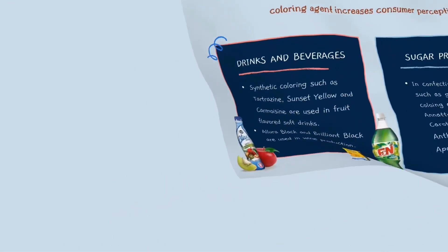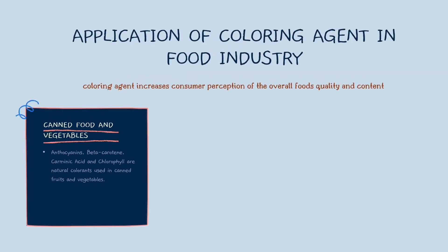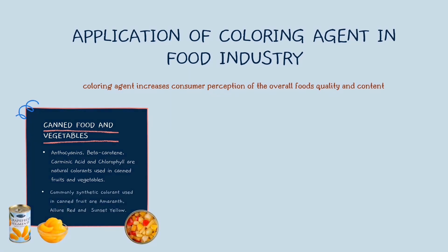Coloring agents are also used in canned food and vegetables. Anthocyanin, beta-carotene, carminic acid, and chlorophyll are natural colorants used in canned fruits and vegetables. Commonly used synthetic colorants in canned fruit include allura red, oil red, and sunset yellow.